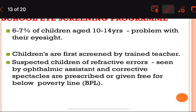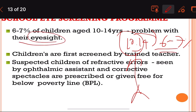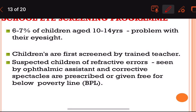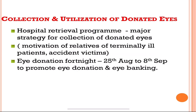The spectacles are given free of cost for people who are below the poverty line. So in the school eye screening program, screening is performed first by the trained teacher, followed by the ophthalmic assistant, who prescribes corrective spectacles — provided free of cost for BPL children.